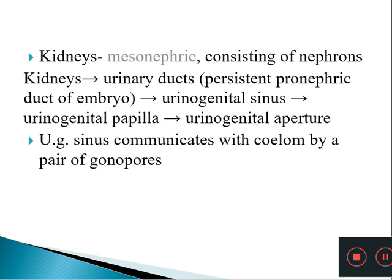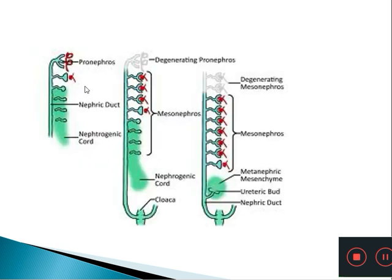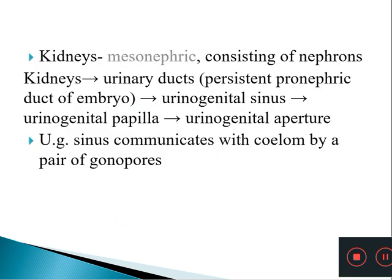The excretory organs are mesonephric kidneys. During development, pronephric tubules disappear and mesonephric tubules become organized into the adult functional kidney. The kidneys consist of nephrons or urinary tubules, which lead to urinary ducts, then to a urinogenital sinus that opens through the urinogenital papilla — located just behind the anus — via the urinogenital aperture.